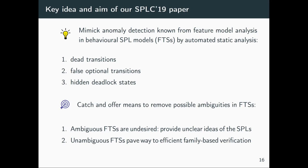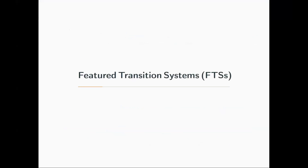We want to find dead transitions, false optional transitions, and hidden deadlock states in feature transition systems. The first two are equivalents of what we saw in the feature model world. Ambiguous FTSs — those having any of these — are typically undesired and may signal unclear design to the developer. Moreover, disambiguating an FTS paves the way to very efficient family-based verification using the existing tooling we already have.